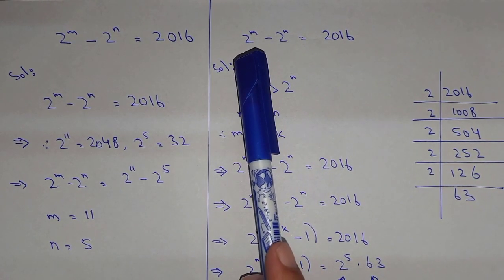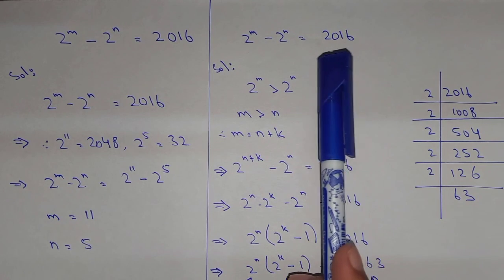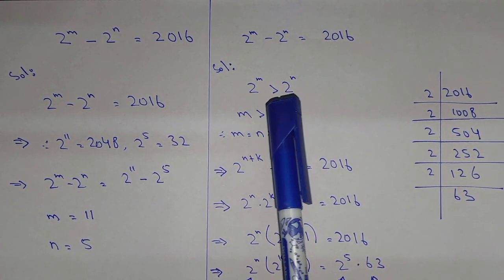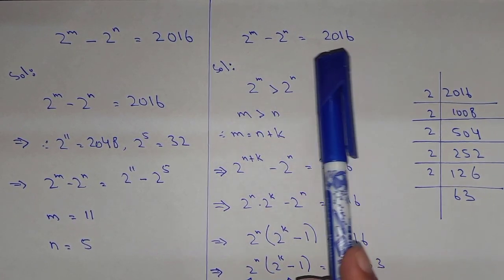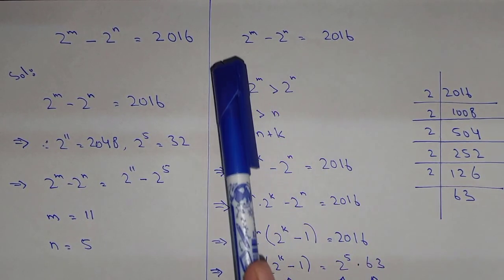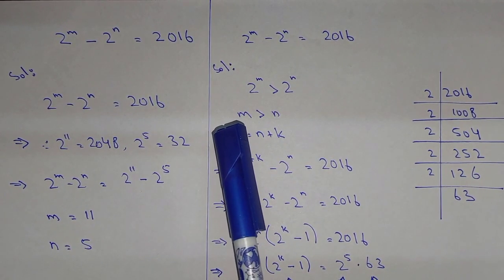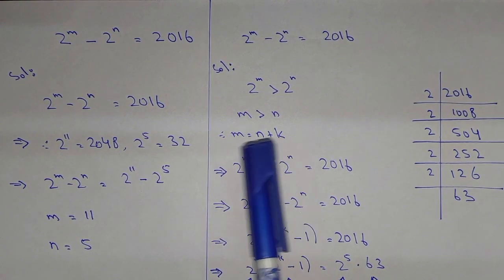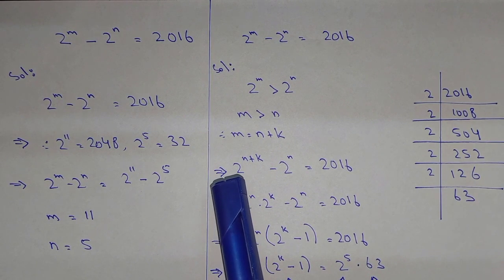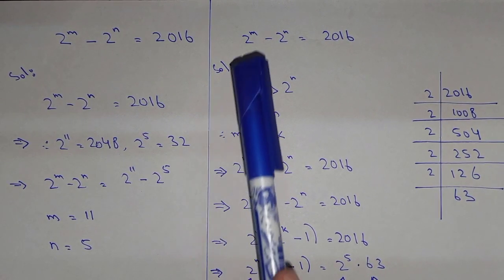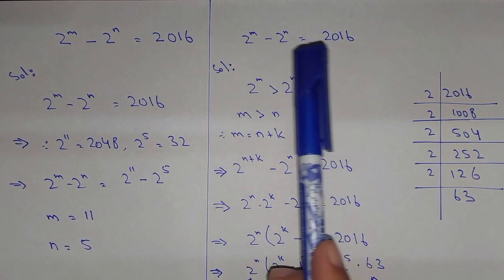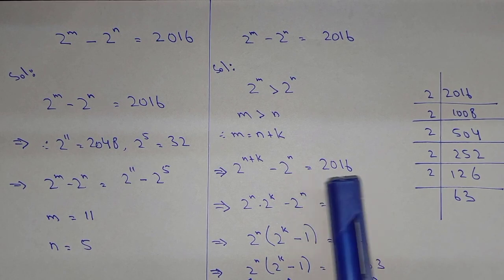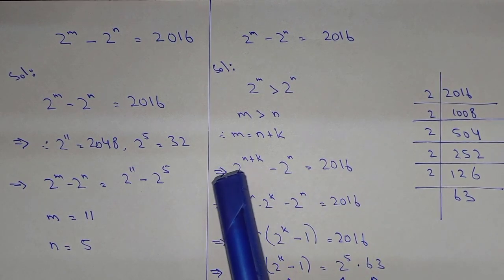Now here we have another method. 2 power m minus 2 power n equals 2016. Since 2 power m is greater than 2 power n because the answer is positive, we can say that m is greater than n. So let's suppose we put m equal to n plus k. Substituting, we have 2 power n plus k minus 2 power n equals 2016.